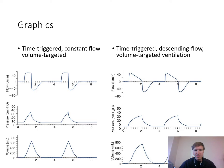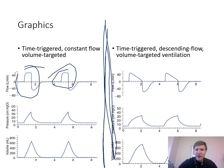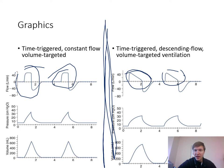Here we're comparing time-triggered constant flow (square waveform) versus time-triggered descending flow (decelerating ramp) in volume-targeted ventilation. In the square waveform, the inspiratory portion looks square. In the decelerating ramp you can see it decelerating down. You can look at the graphic and automatically know if they're in a ramp or square waveform — it helps identify both patient interaction and what settings you have, even if you can't see them right on the vent screen.